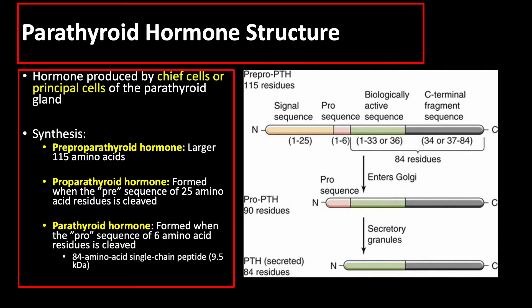This mature parathyroid hormone is an 84 amino acid single-chain peptide, approximately 9.5 kilodaltons, and it has a short half-life, which is less than 5 minutes.